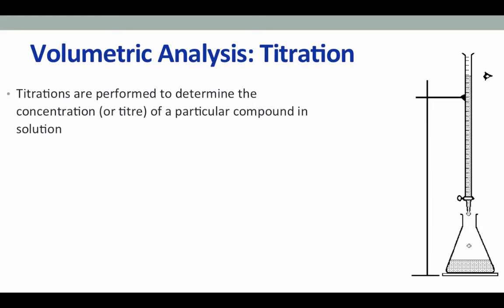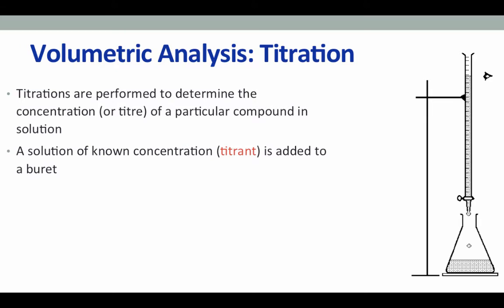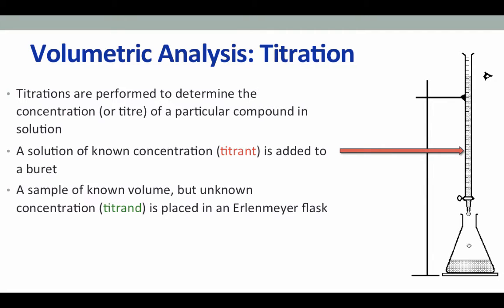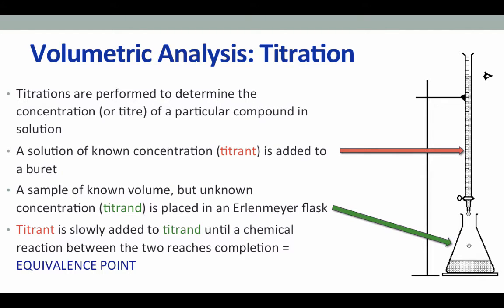Titrations are performed to determine the concentration of a particular compound in solution. The setup for a titration always uses a burette and an Erlenmeyer flask. The solution of known concentration is usually added to the burette, and the sample of known volume but unknown concentration is usually placed in the Erlenmeyer flask. The titrant in the burette is slowly added to the titrant in the Erlenmeyer flask until the chemical reaction between the two reaches completion, and we can see this through the end point and assume that we have surpassed the equivalence point.